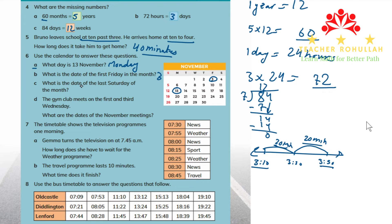Part C says: what is the date of the last Saturday of the month? Looking at the Saturday column, the last Saturday of November is the 25th. The answer for part C is 25.